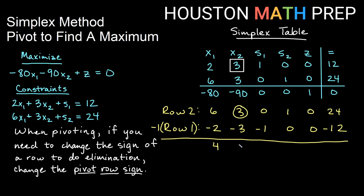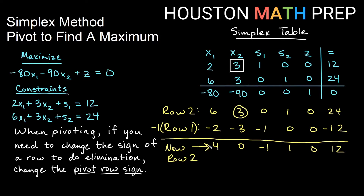Adding the rows together we get: 4, 0, negative 1, 1, 0, and 12. Remember, we were changing row two, so this is our new row two. We'll put that in the table replacing the original row two, and then keep working down the pivot column to get the rest of the column to be zero other than the pivot entry.